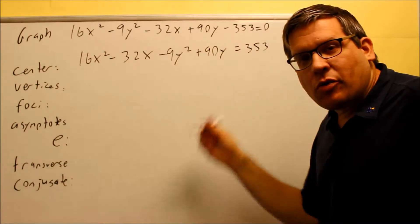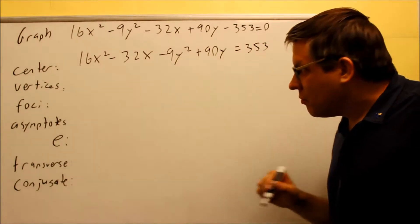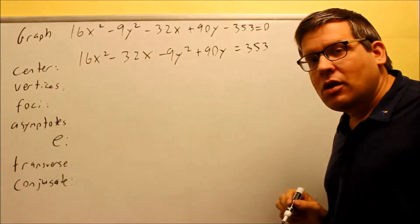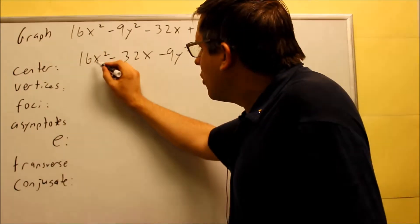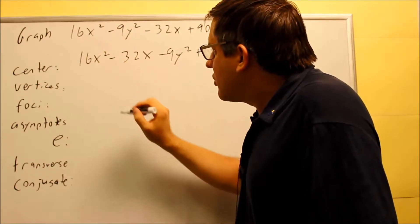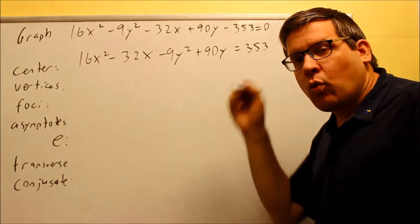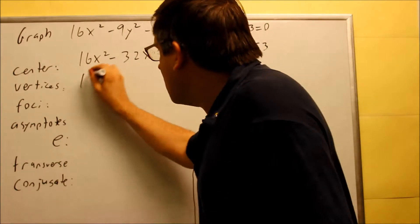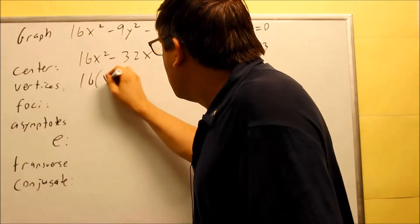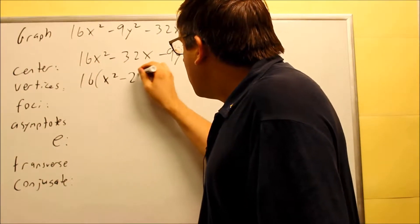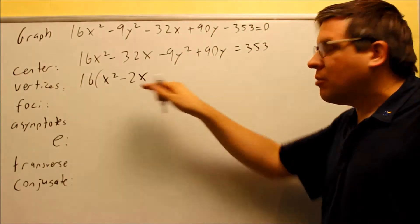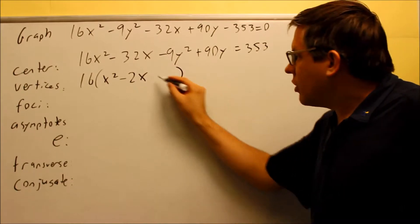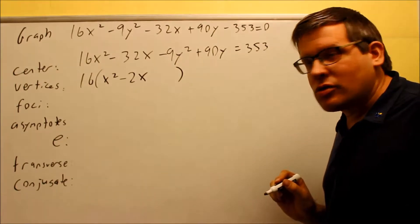Like we did in the ellipses section, you want to factor out just the number in front of the squared term. We're going to pull out just 16 so we get a 1 in front of x squared, and that way we can complete the square. So: 16 times (x squared minus 2x), and we leave a space there because we'll fill it in with the complete the square steps.